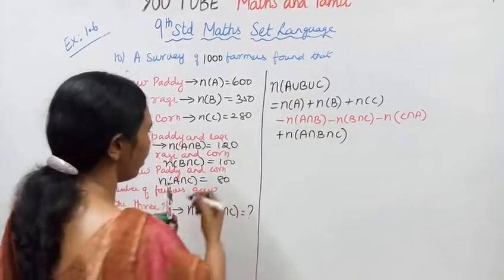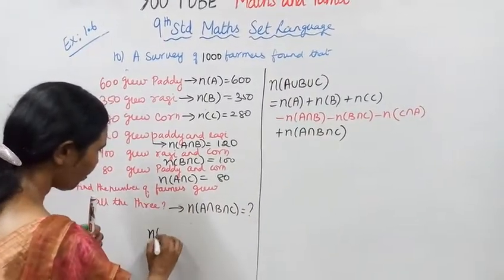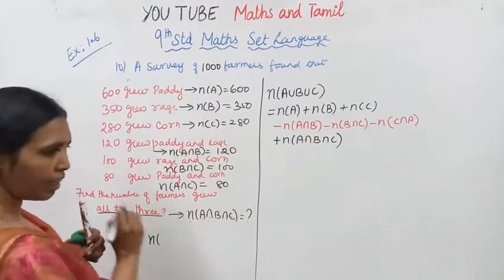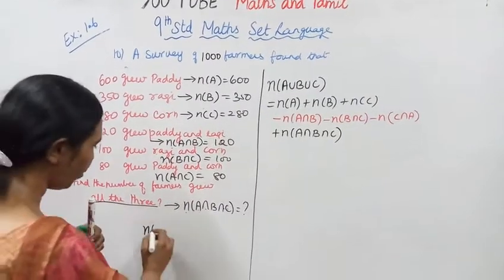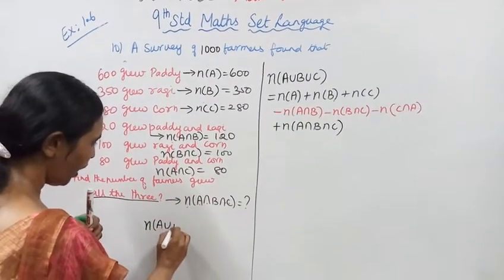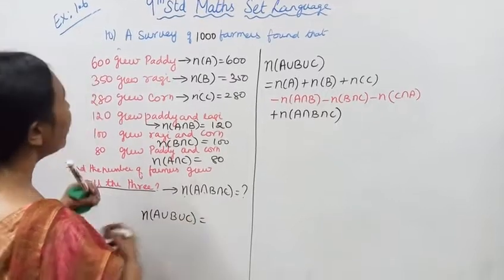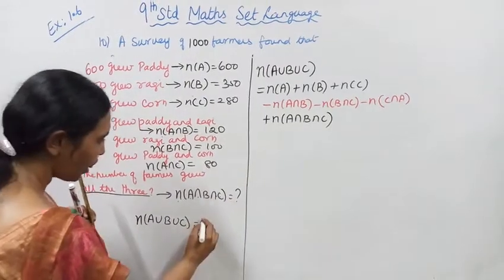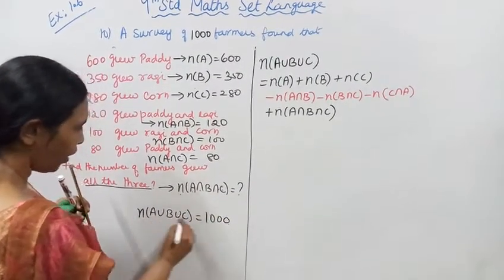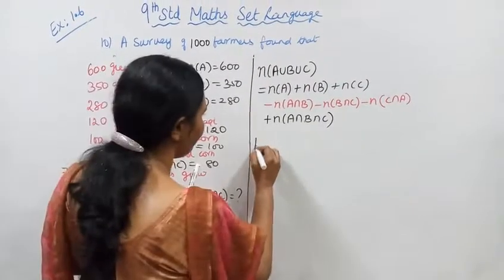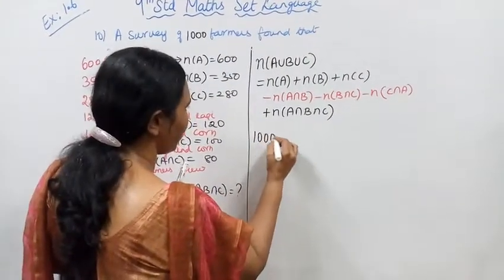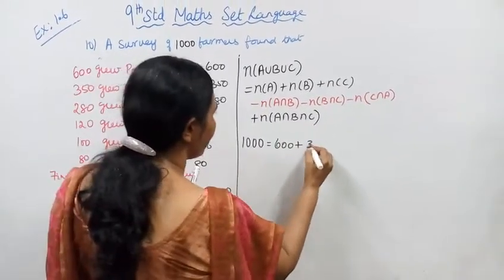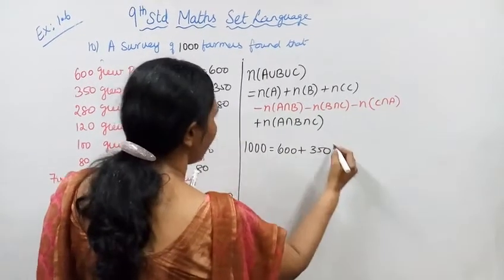N(A∪B∪C) is what we need to find, which is the total survey of 1000 farmers, so N(A∪B∪C) = 1000. N(A) = 600, N(B) = 350, N(C) = 280.